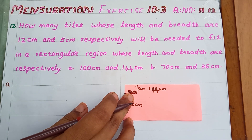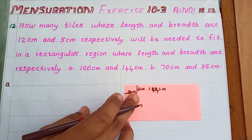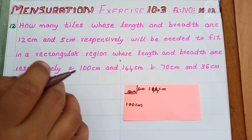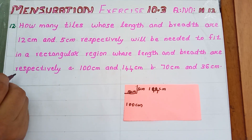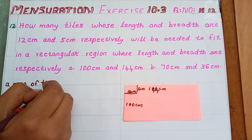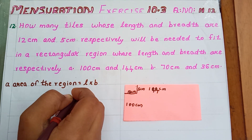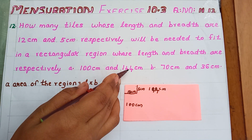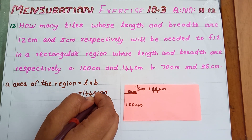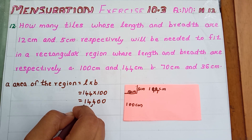To find how many tiles are needed, first we find the area of the whole region, then the area of the tile, then divide the region's area by the tile's area. Area of the region equals length into breadth: 144 cm into 100 cm equals 14,400 cm².